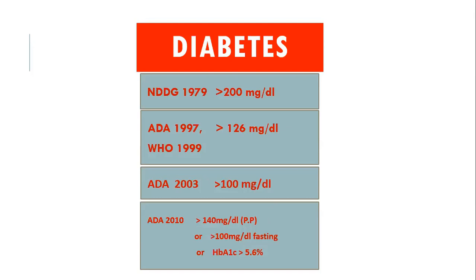Due to this, more people came into the category of diabetes patients. It is similar to a situation in a school where the passing percentage was 33%, and then management decided that only 80% scorers would be promoted. The number of failures increased simply because the passing range was narrowed. The same thing is happening in our lives — most patients are just taking medicine to meet the figure of 100 mg per deciliter, though they are not sick, have no symptoms, but per the definition they are diabetic.